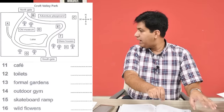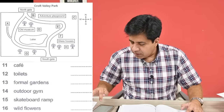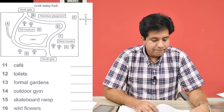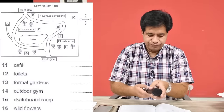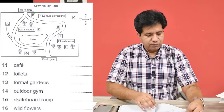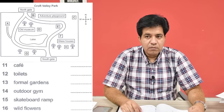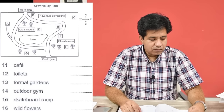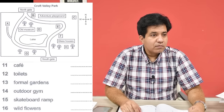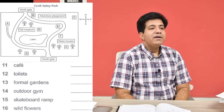Let's see question number 11. We start with that. 'As chair of the town council subcommittee on park facilities, I'd like to bring you up to date on some of the changes that have been made recently to the Croft Valley Park. So if you could just take a look at the map I handed out — the basic arrangement of the park hasn't changed. It still has two gates, north and south, and a lake in the middle. The cafe continues to serve an assortment of drinks and snacks and is still in the same place, looking out over the lake and next to the old museum.'